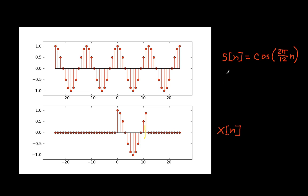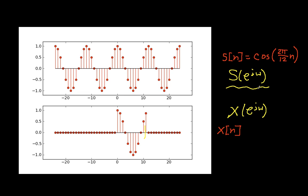The question we're going to ask and answer by computing is how S of e to the j omega and X of e to the j omega compare. So the first thing we need to do is find S of e to the j omega, and we'll do this by using the fact that S of n is a periodic signal. It has a period of 12, so its fundamental frequency will be 2π over 12.